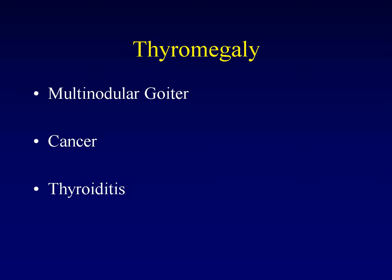Let's talk about thyromegaly. In the United States, the most common cause of thyromegaly is a multinodular goiter. This is an adenomatous, benign disease, and the big problem with it is the mass effect it causes on surrounding structures, particularly the trachea. However, there are also thyroiditis and inflammatory diseases — usually autoimmune rather than infectious — that can affect the thyroid gland.